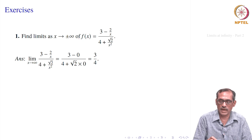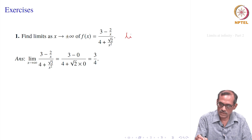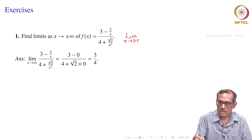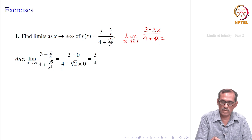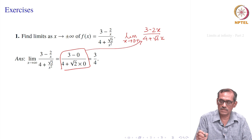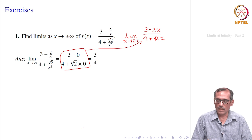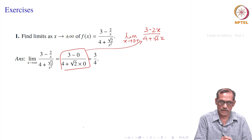If you use the earlier idea, you may write it as limit x goes to 0 plus of f(1/x). So f(1/x) will be (3 minus 2x) divided by (4 plus root of 2x). Now when x goes to 0 plus directly, it gives 3/4 because this becomes 0 and this becomes 0. So this expression is still valid with this.